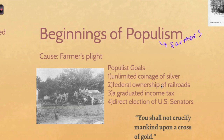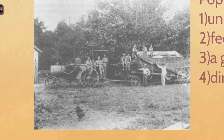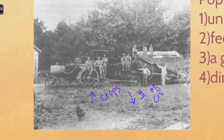A lot of populist goals do get achieved, but maybe not from a populist political leader — other political parties adopt their ideas. An image you might see associated with this topic is new farm equipment. The problem with new farm equipment is it increases the amount of crops you make, but it decreases the price of crops. This is going to be one of the big things that leads to the farmer's plight.